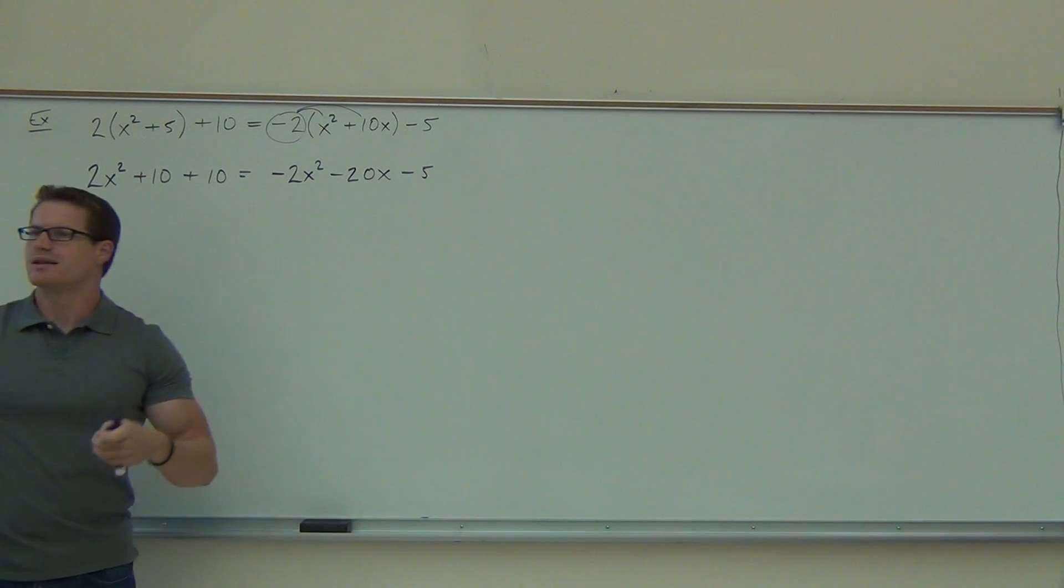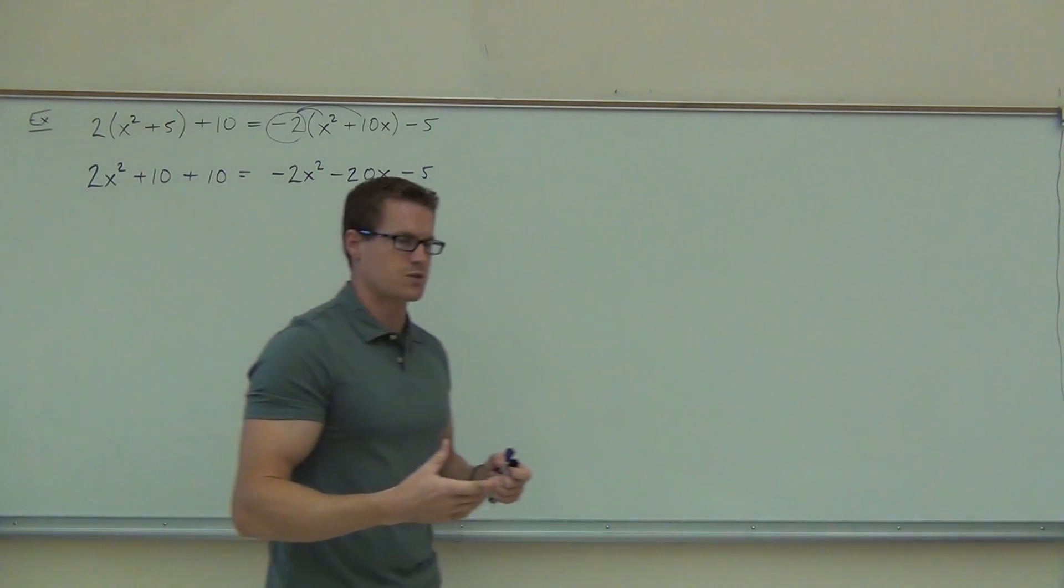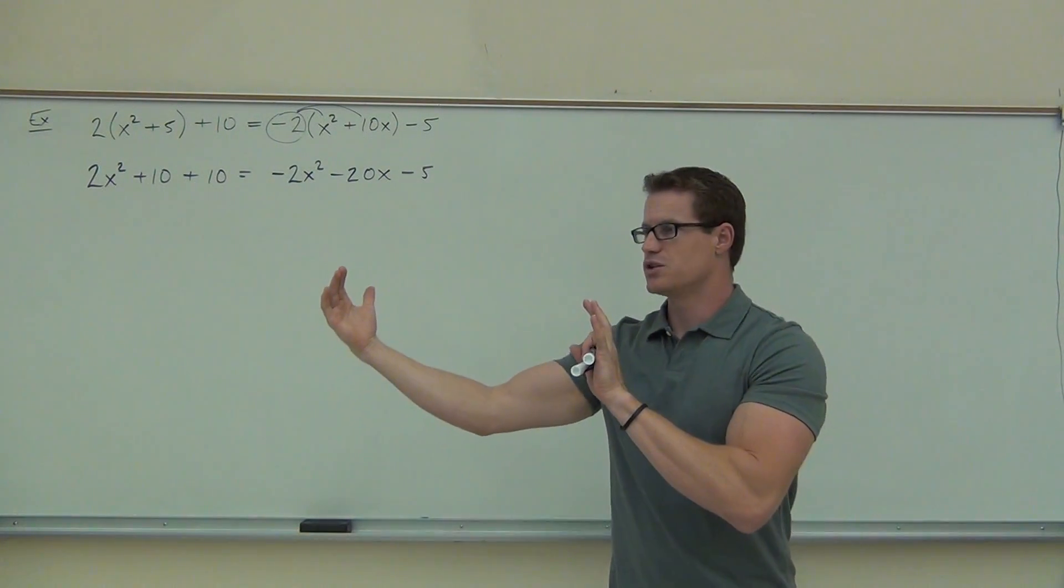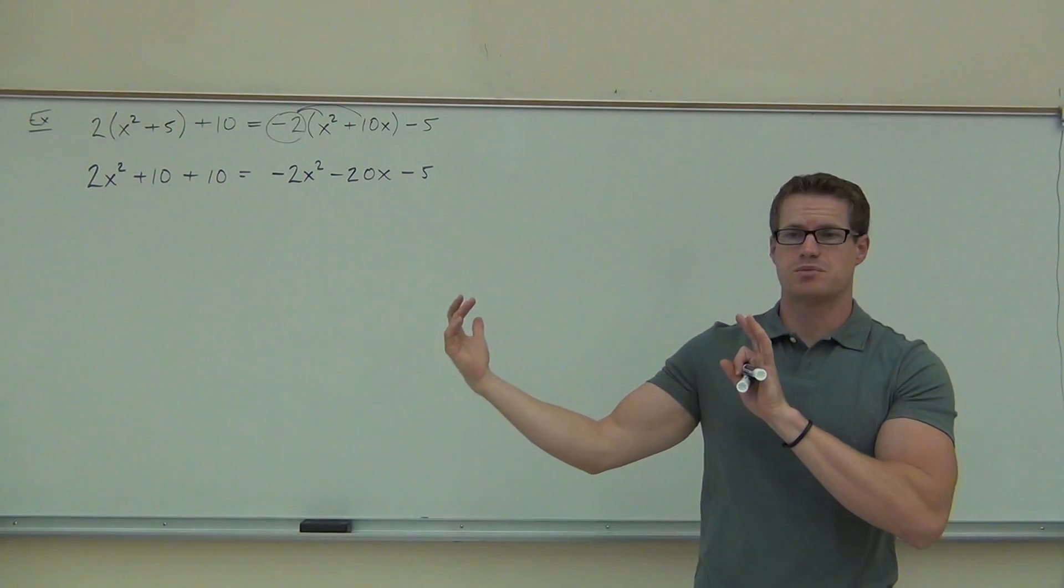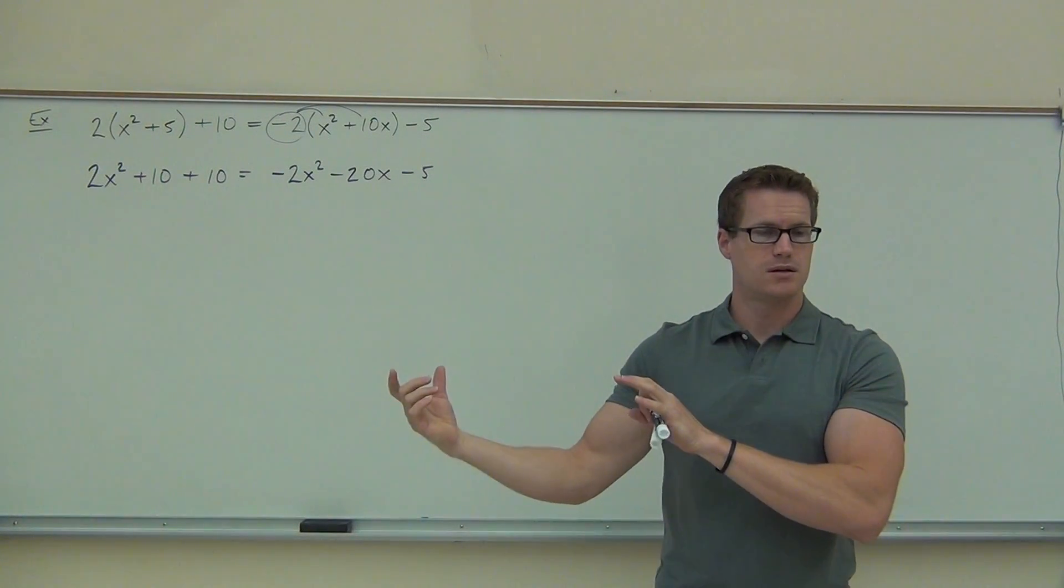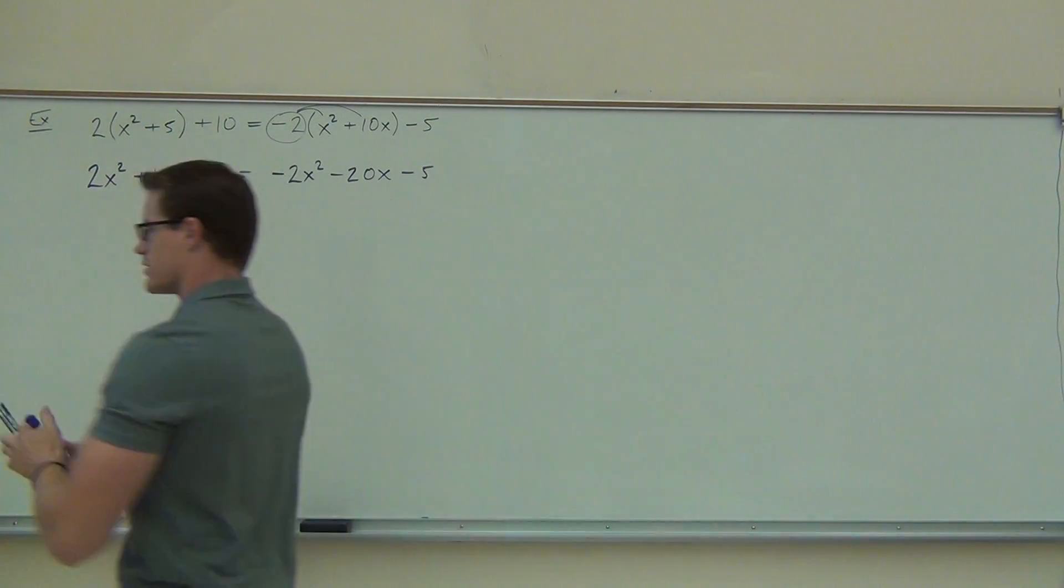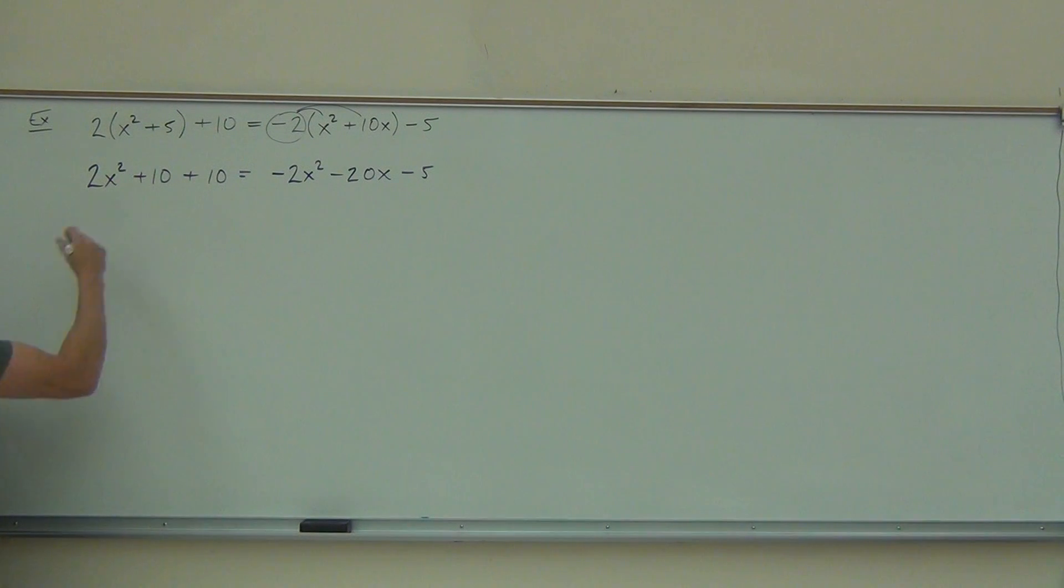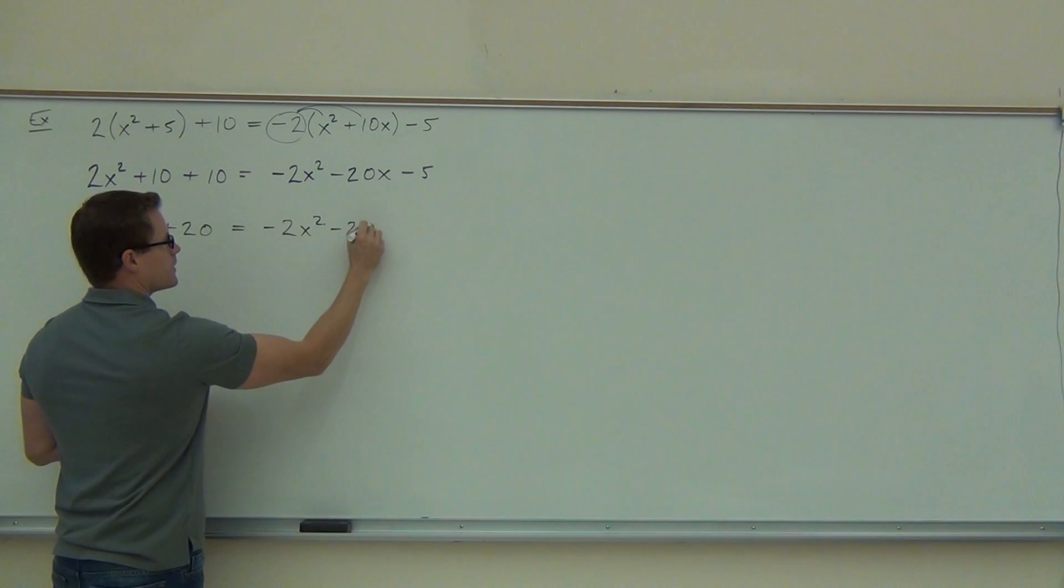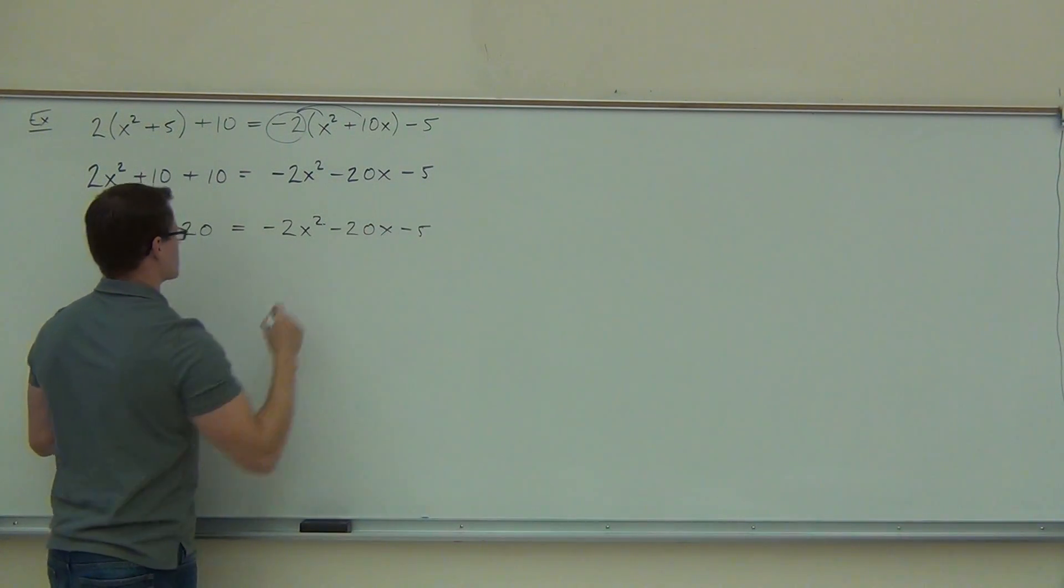Next step, we are going to continue down and see if we can combine any like terms. Remember when we talked about like terms, they have to be on one side of an equation. So do we have any like terms in this problem? Yes. On the right side? No. On the left side? On the left side. Yeah, just our numbers there. So when we combine those, we'll get our 2x squared plus 20. On the right hand side, we're just going to leave it the same. Negative 2x squared minus 20x minus 5.